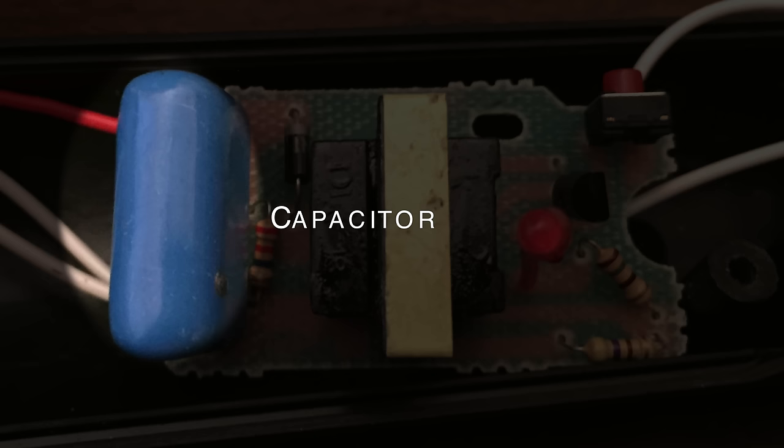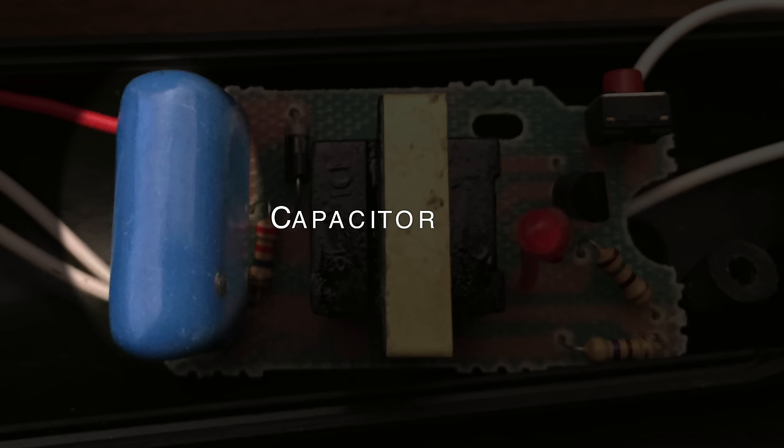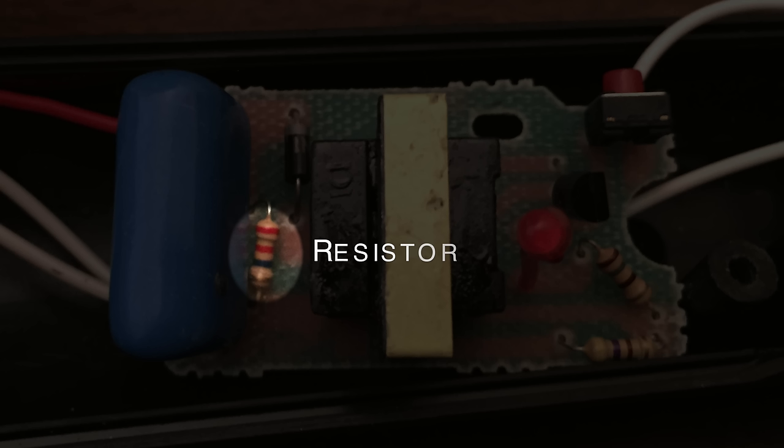This capacitor here is storing a lot of the energy from the rest of the circuit. Once it charges up completely, it just sits around and waits for an unsuspecting bug to make contact with the metal mesh. This resistor is called a bleed resistor, and its main purpose is to drain the capacitor when you're not using the bug zapper so you don't accidentally shock yourself.